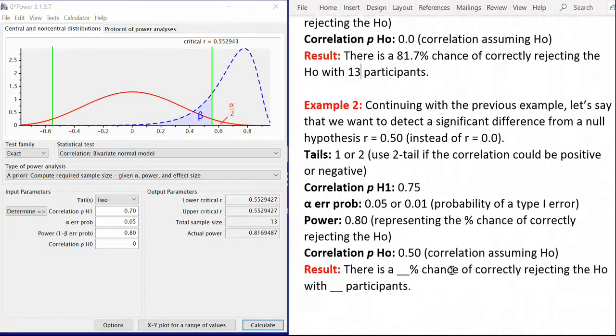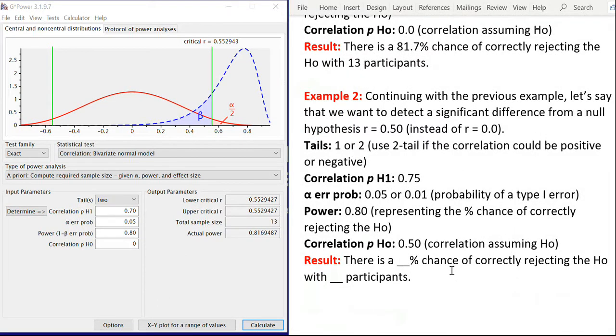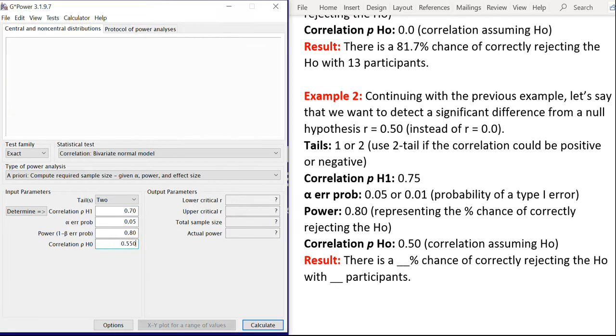So I have another example here. Sometimes the null hypothesis Pearson r value will not be zero. It could for example be a value of say 0.50. And so we want to run a power calculation with the null hypothesis value being 0.50 instead of just plain zero. So I'm just going to make that adjustment here. The null hypothesis value 0.50.